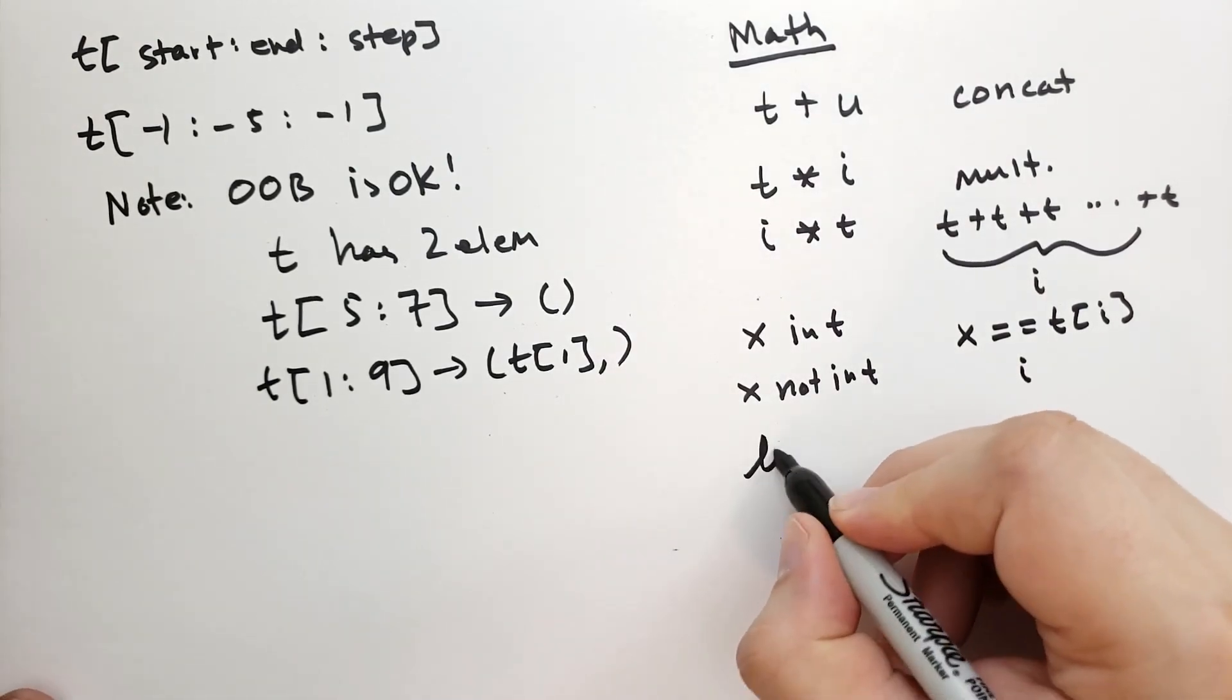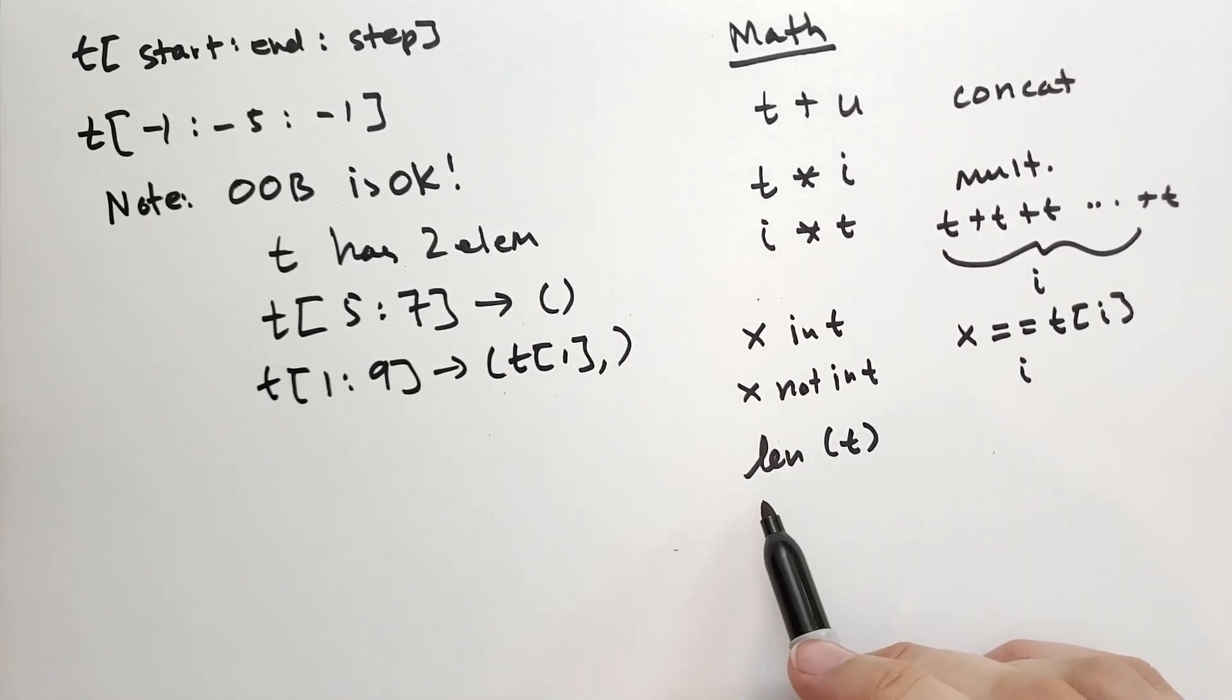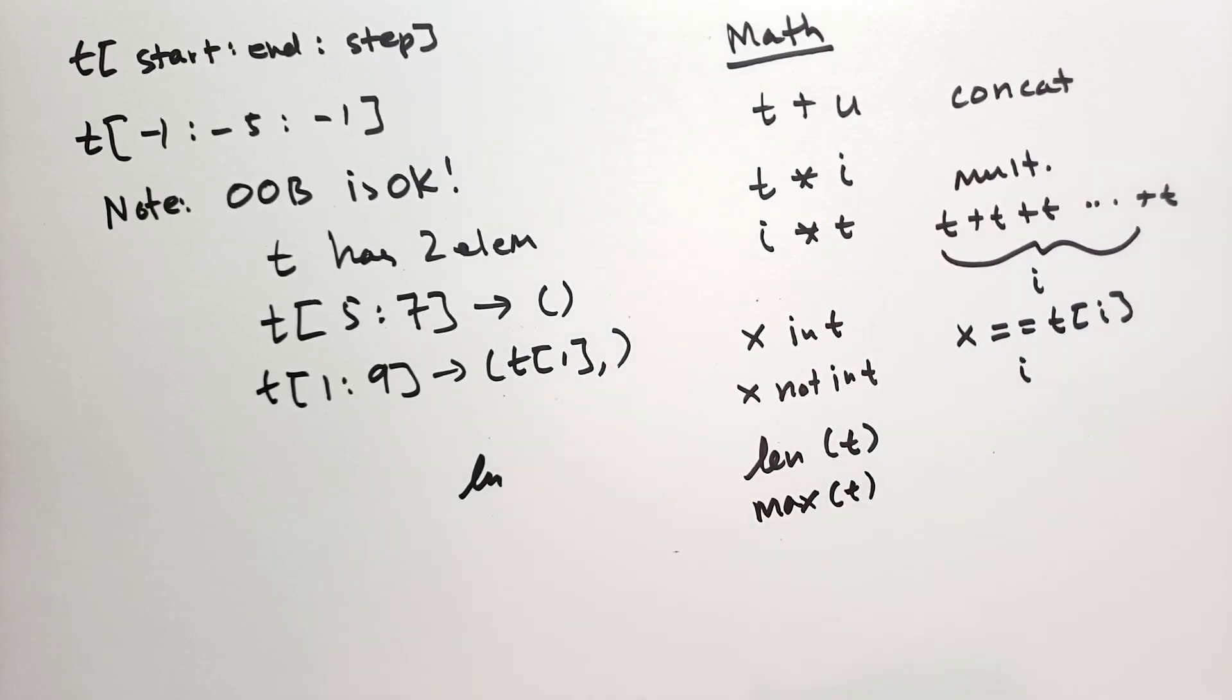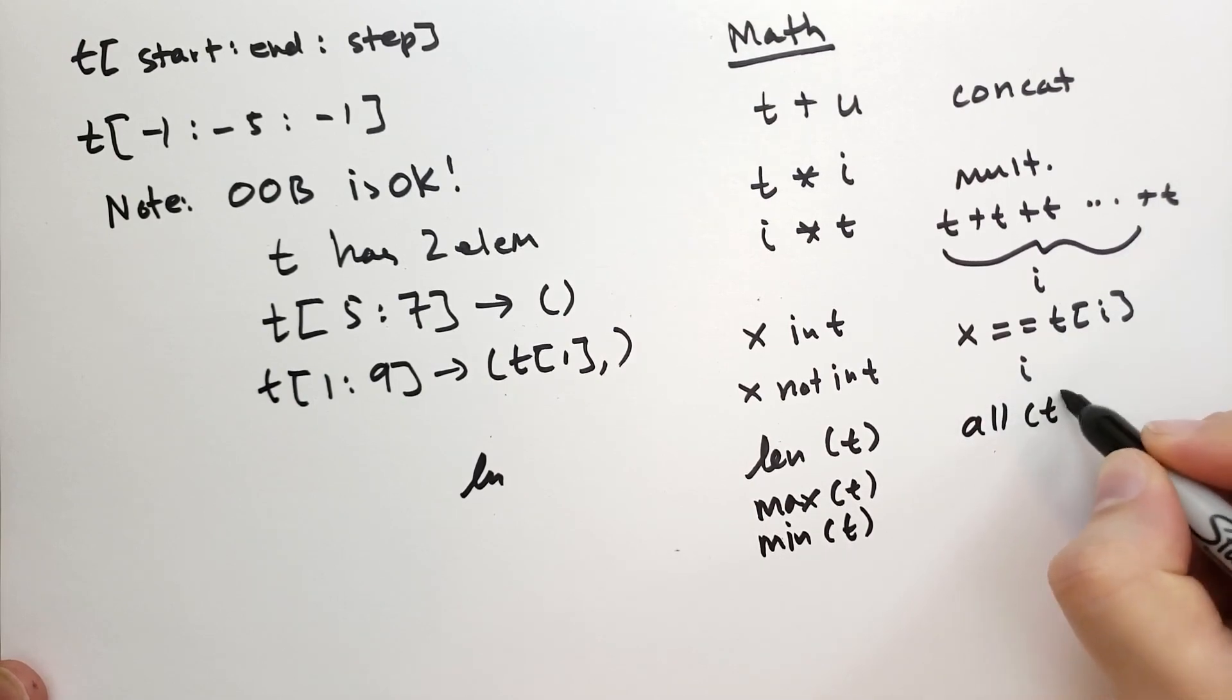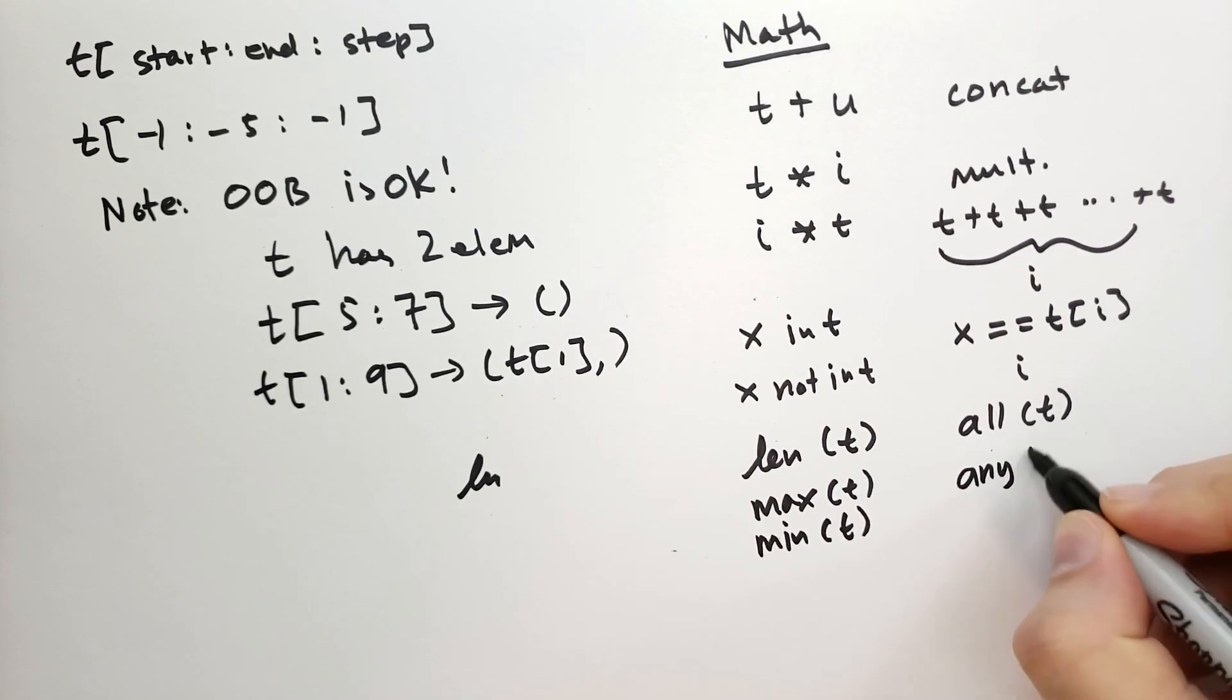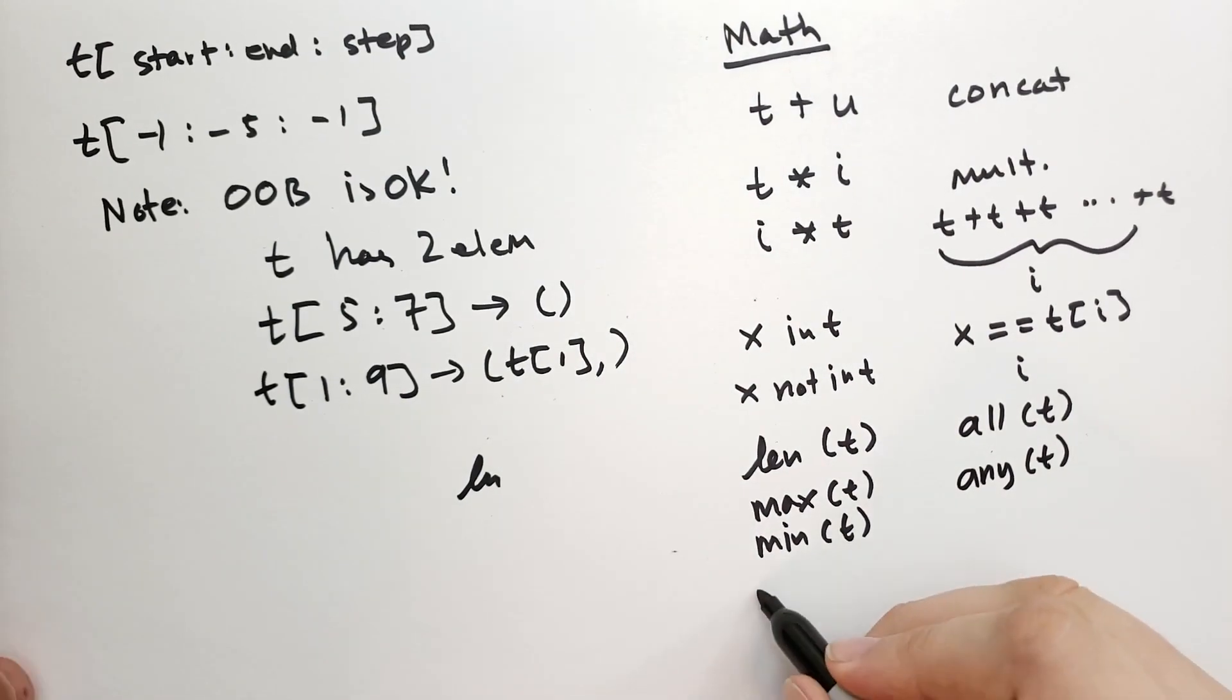We can do len of t. So len of t will give you the length of t. We can do max, which will return the greatest element in t. And min will return the least element in t. We also have all of some tuples. And what all does is make sure that each element inside the tuple is true. If any of them are false, this is false. If all of them are true, this is true. And we also have any of t. And any says if any of the values of t are true.